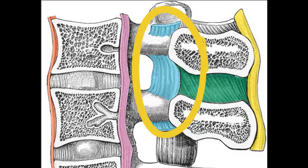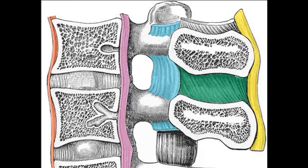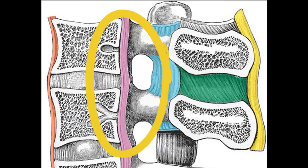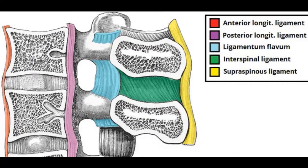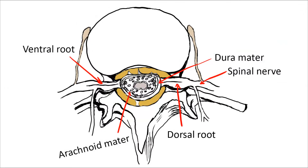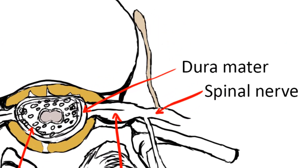You have the ligamentum flavum, shown in light blue, which protects it posteriorly, and then you have the posterior longitudinal ligament, shown in purple, which supports it anteriorly. The others include the anterior longitudinal ligament, interspinal ligament, and supraspinous ligament.